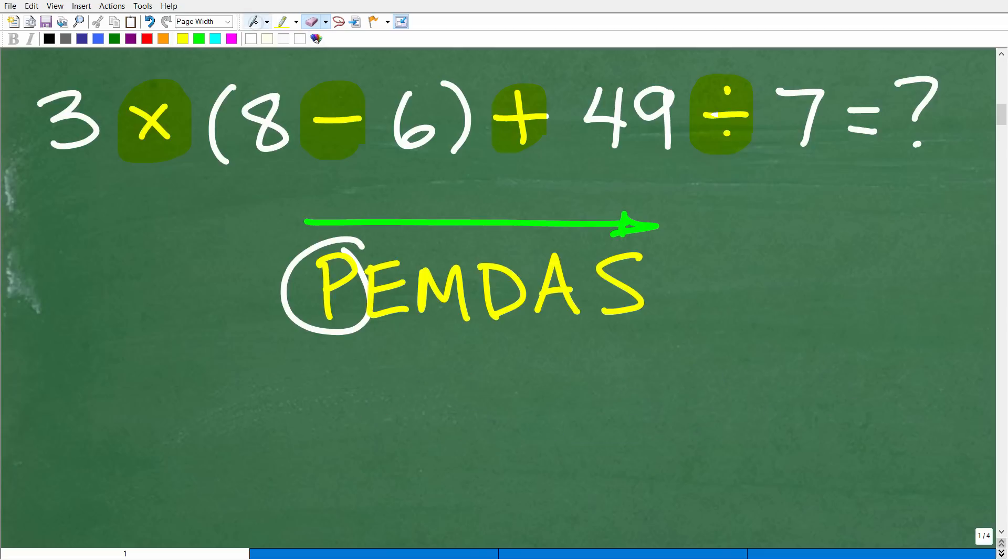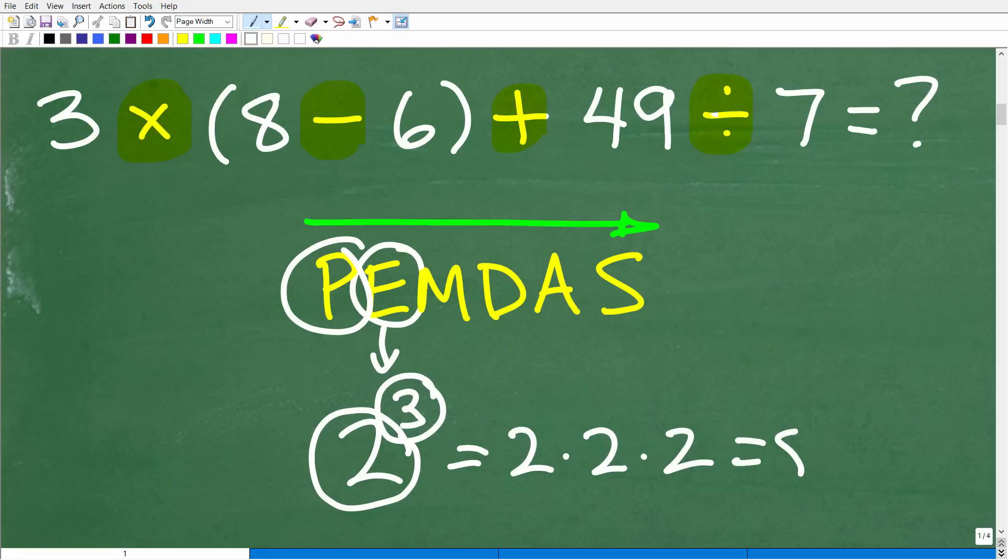Okay, so the next thing on our checklist here is E. Now, E stands for exponents, but you can think of this as powers. So if you have 2 to the 3rd power, this little 3 right here is called the exponent. The 2 is called the base, but 2 to the 3rd power means take 2 and multiply it by itself 3 times. 2 times 2 times 2 is 8. Okay, so that's a simple illustration of powers and exponents.